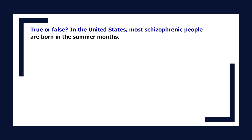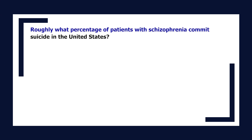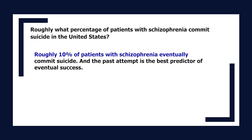True or false: in the United States, most schizophrenic people are born in the summer months. The answer is false. Most schizophrenic patients in the United States are born in the winter, and the reason is unknown. Roughly 10% of patients with schizophrenia eventually commit suicide, and a past attempt is the best predictor of eventual success.